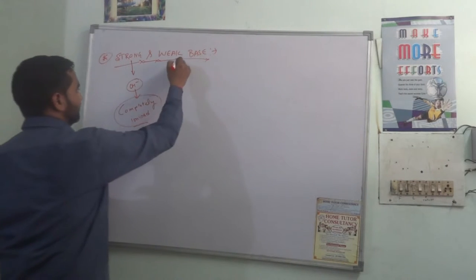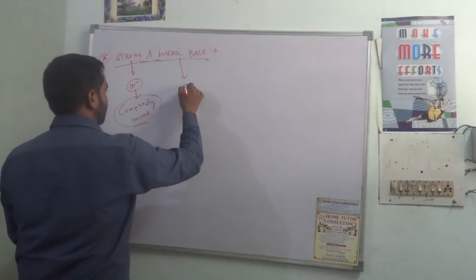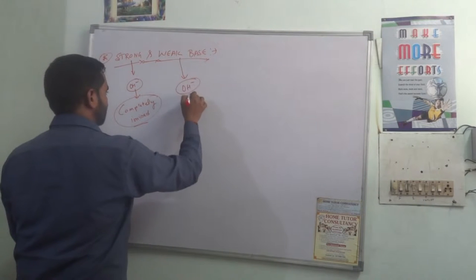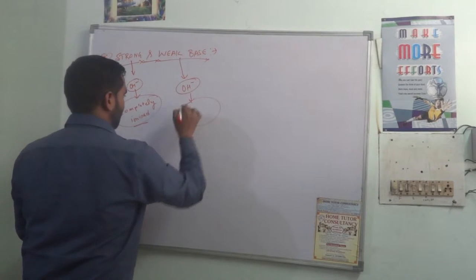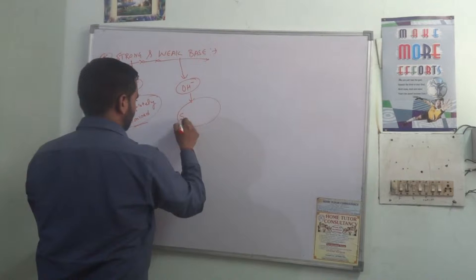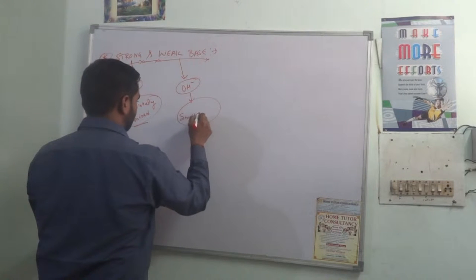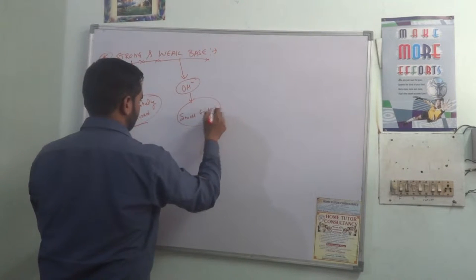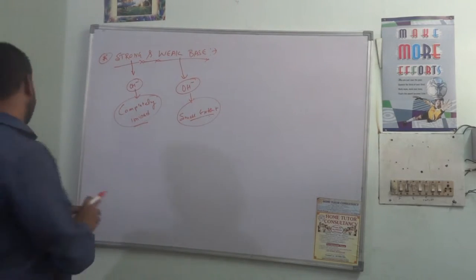And those bases which are ionized but very little, ionized to small extent or small extent of ionization, are called weak bases.